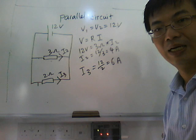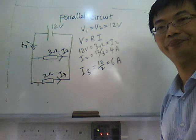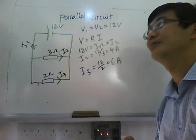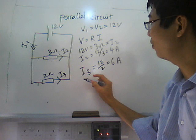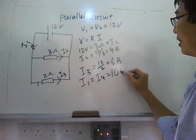What about the current I1? A student suggests 6 plus 4. Good. In a parallel circuit, the voltages are the same, but the currents must add up together to give the main current. So I1 will be 4 plus 6, giving 10 amperes.